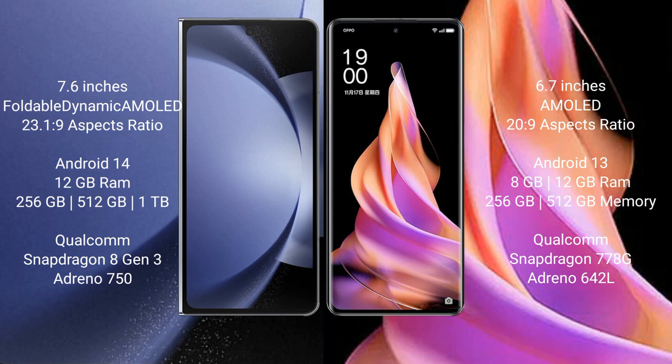Samsung Galaxy Z Fold 6 runs on the Android 14 operating system, while OPPO Reno 9 runs on Android 13. Samsung Galaxy Z Fold 6 comes with 12GB RAM and 256GB or 512GB internal storage, powered by a Qualcomm Snapdragon 8 Gen 3 processor with Adreno 750 GPU.